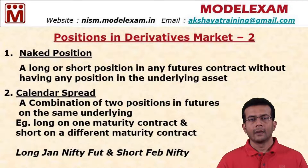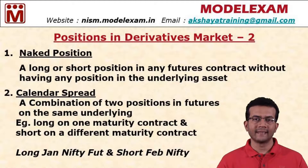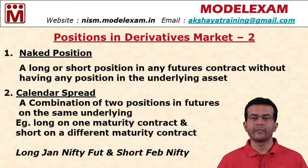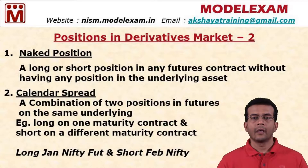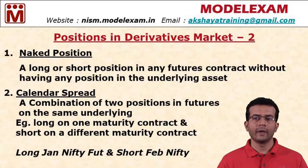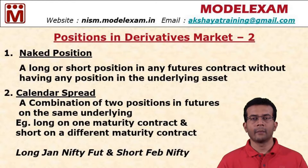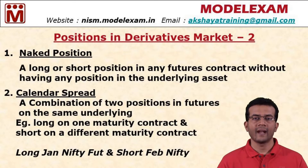The next one is a calendar spread — a combination of two positions in futures on the same underlying asset. It involves being long on one maturity contract and short on a different maturity contract. For example, going long on January Nifty futures and short on February Nifty futures is a calendar spread. Similarly, going short on January Infosys futures and long on February Infosys futures is also an example of a calendar spread.